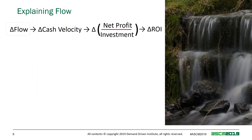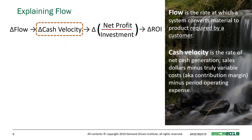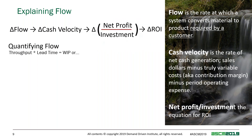How do we explain flow? Flow is the rate at which a system converts material to product — and that product has to be required by a customer. Flow is not the rate at which we make stock; it has to connect to a customer requirement. Cash velocity is the rate of net cash generation. Net profit over investment is, of course, the equation for return on investment. We can quantify flow through Little's Law: if we know throughput and lead time, we can determine WIP, and so on.